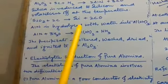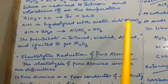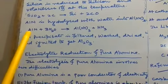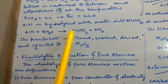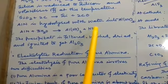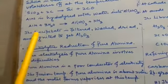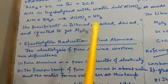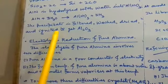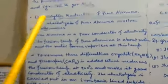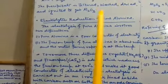Aluminum nitride is hydrolyzed with water into aluminum hydroxide. AlN plus 3H2O gives Al(OH)3 plus NH3. The precipitate is filtered, washed, dried, and ignited to get Al2O3.